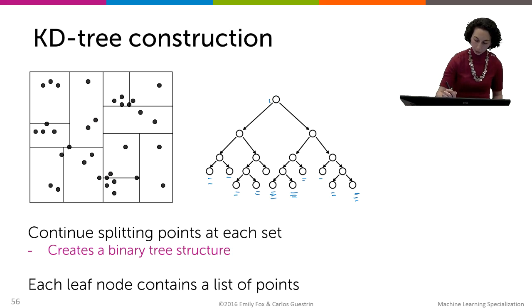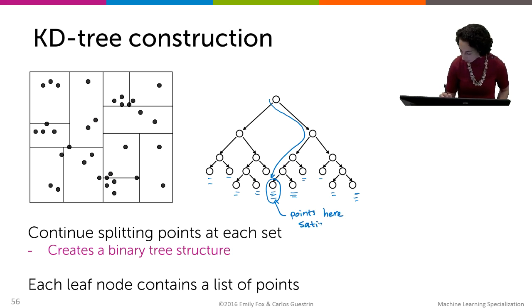So to be clear, if we trace our way down the tree to any given leaf node, the points that appear here will satisfy all conditions that were specified at each one of the splits above along the path.